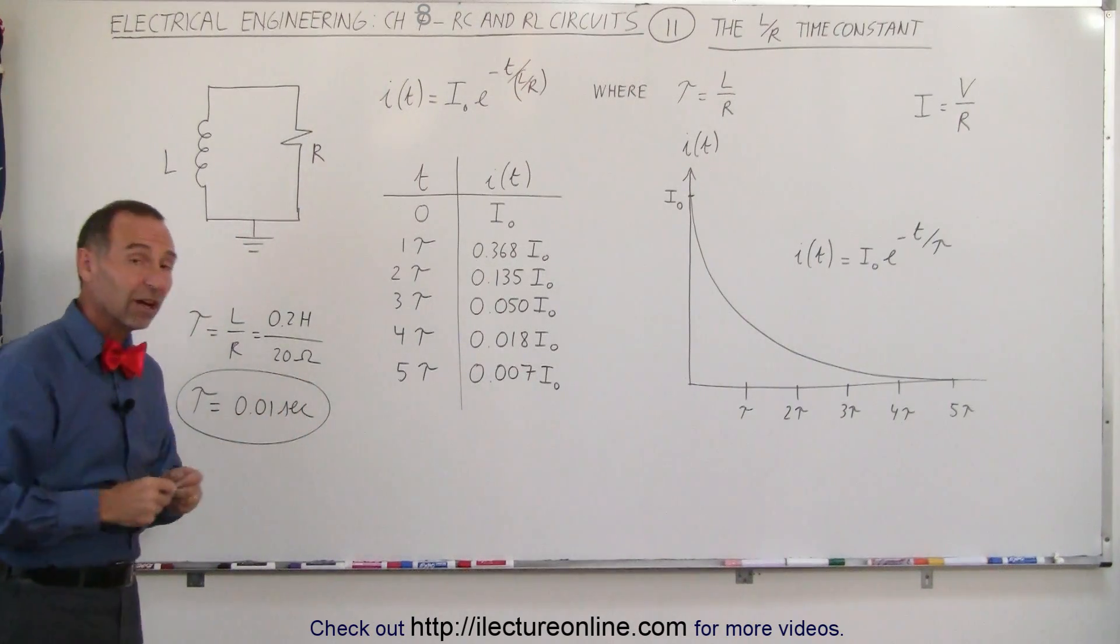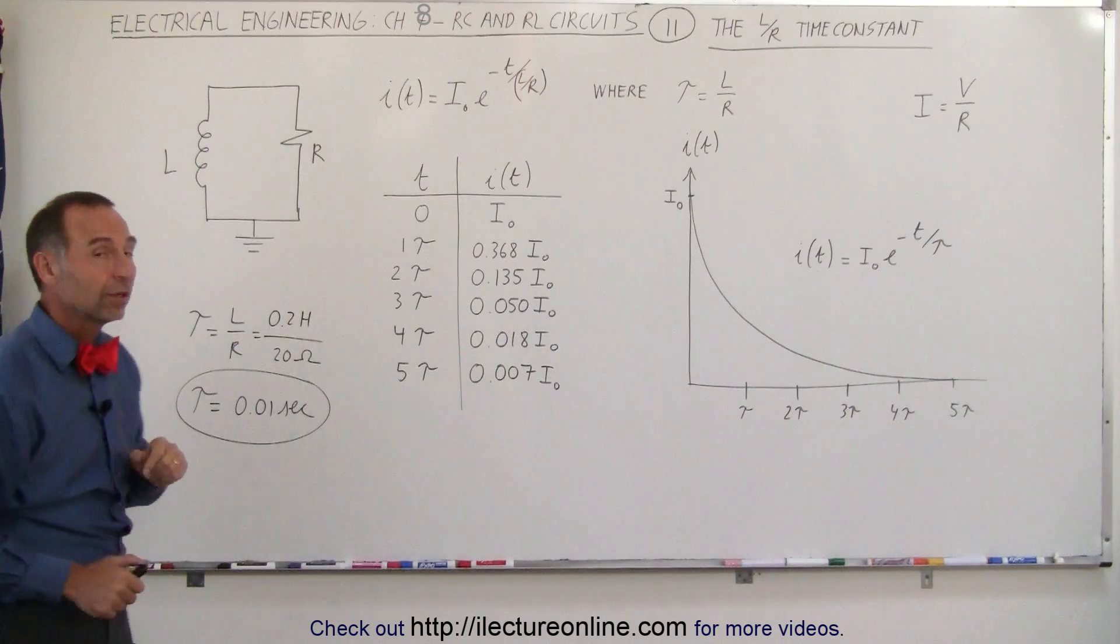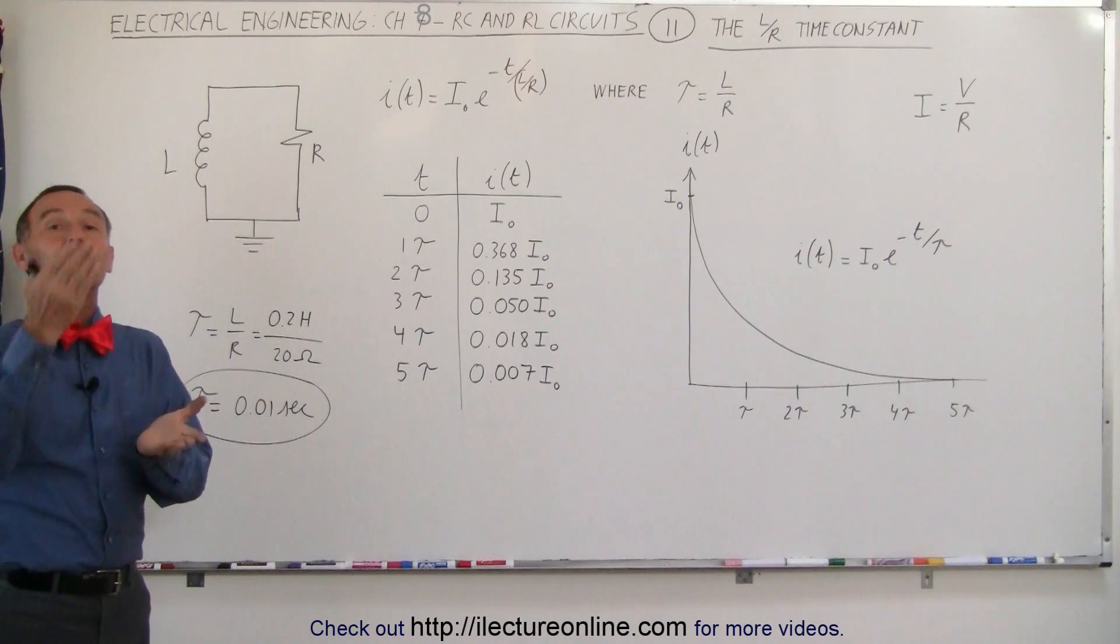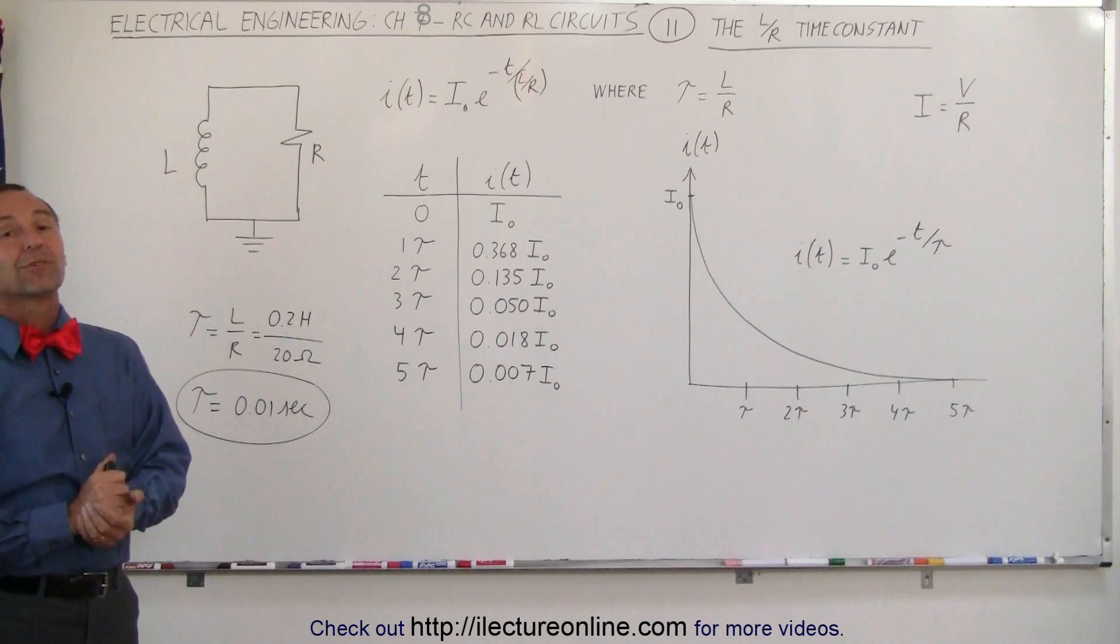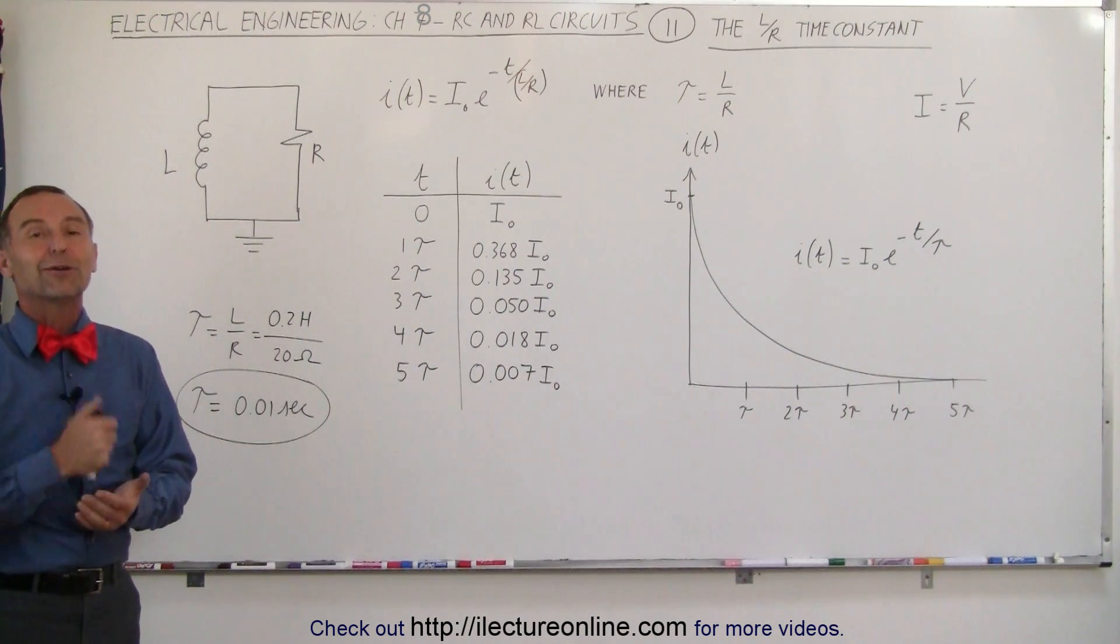And so in this case, under these circumstances, with an inductor of 0.2 henrys and a resistance of 20 ohms, it would take about 0.05 seconds for the current to go from its initial value to its final value, or close to its final value of 0 amps. And that's what we mean by the time constant in an RL circuit.